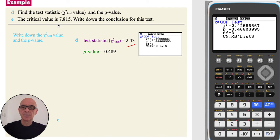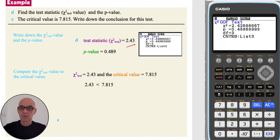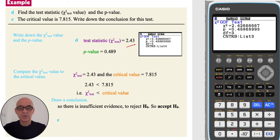In part E, as the critical value is given, we can compare the test statistic to the critical value. And as 2.43 is less than 7.815, in other words, as the chi-squared test statistic is less than the critical value, we conclude that there is insufficient evidence to reject the null hypothesis H0. So we accept it.